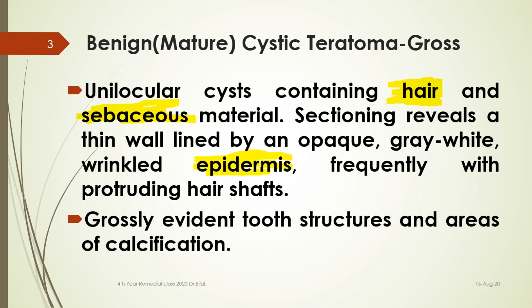There may be a portion of epidermis or skin visible on gross inspection in a picture given in an exam. So the most important things to remember are that hair, sebaceous material, and epidermis or skin may be identified on gross inspection, and sometimes tooth or bone can also be seen. You can expect almost any tissue because this is a tumor that shows structures derived from all three germ cell layers.